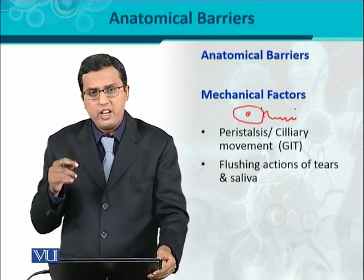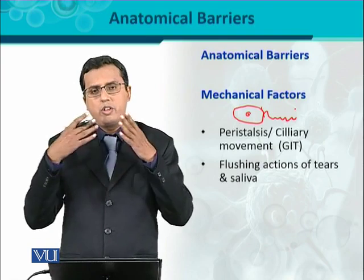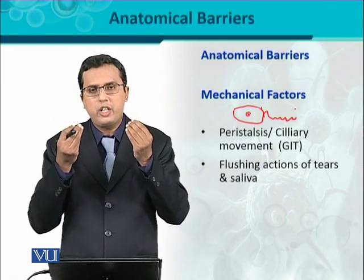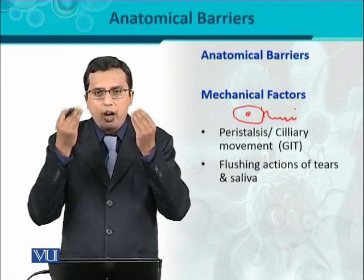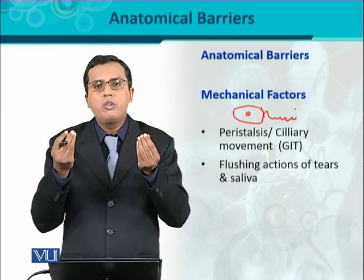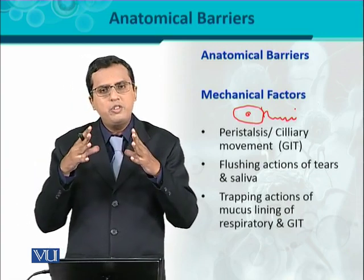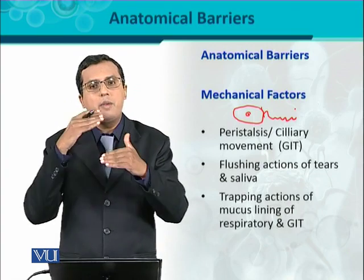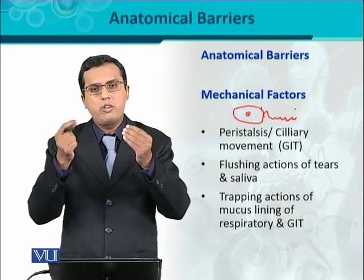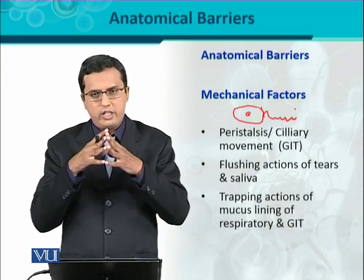Similarly, the flushing action of tears and saliva secretes various substances in whose presence microorganisms are removed. For example, when microorganisms try to enter the eyes, the first response is that tears come — they are basically exhibiting a flushing action to remove the infectious agent. Similarly, the trapping action: the mucus membrane is lined by mucus, a thin slimy or sticky substance. When microorganisms enter, they get trapped inside it — just like a rat trap or mosquito trap.